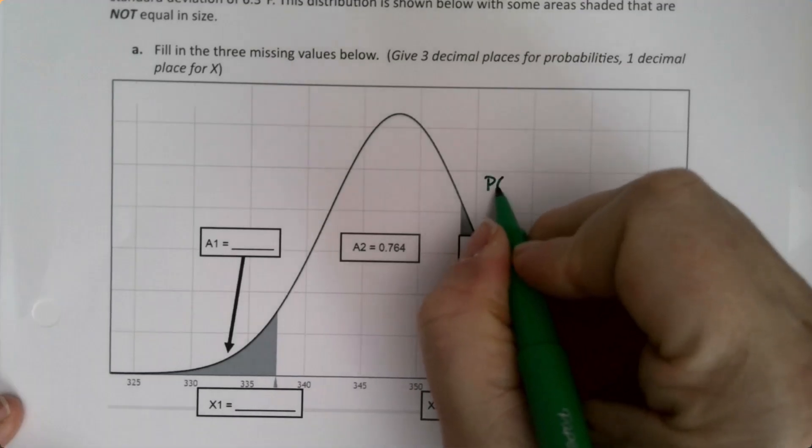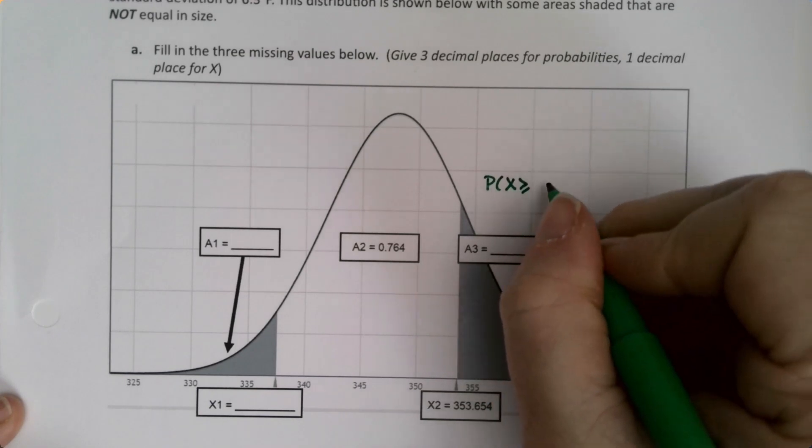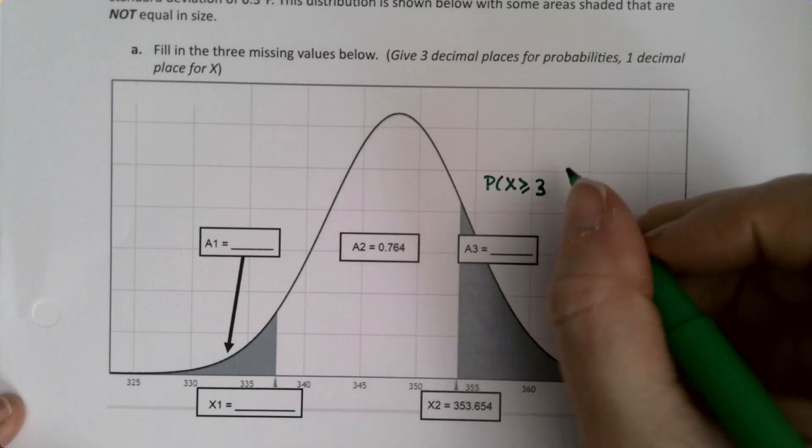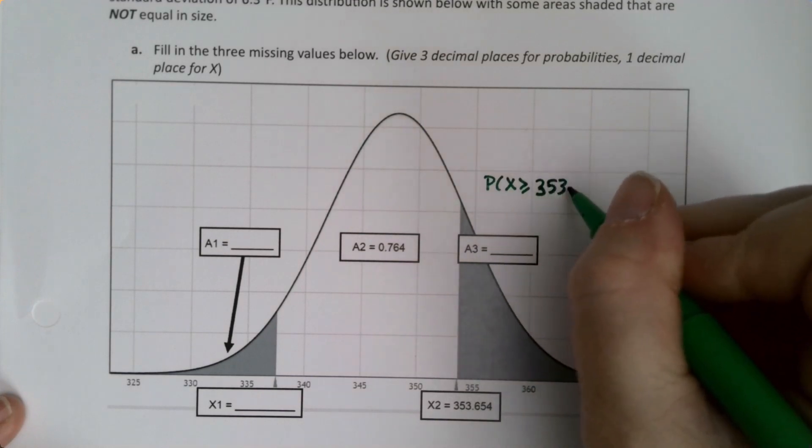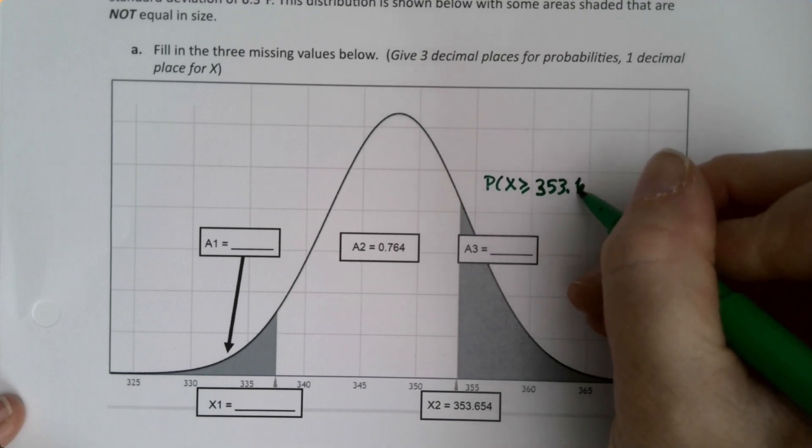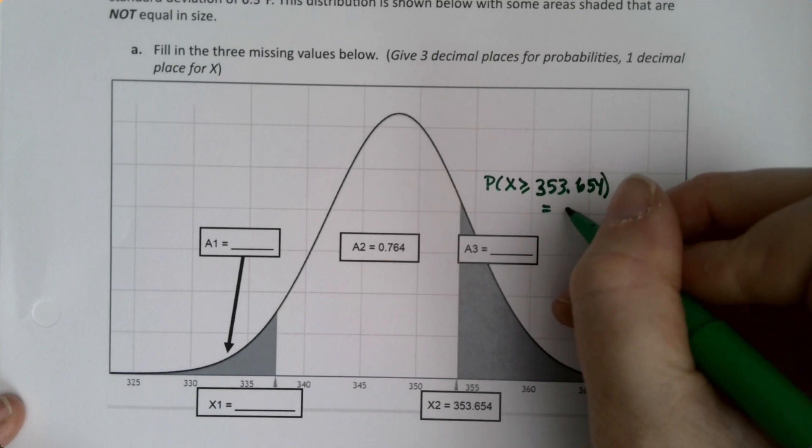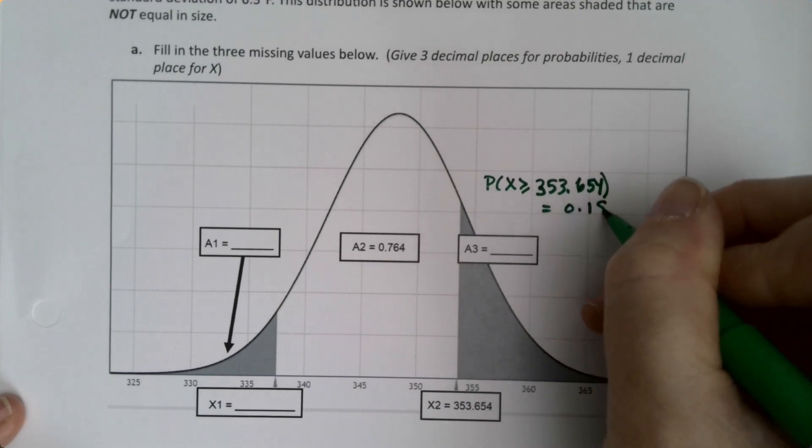So I'm learning what it looks like. So this is P(X ≥ 353.654) = 0.189.